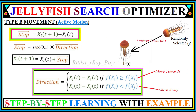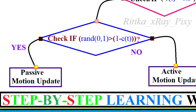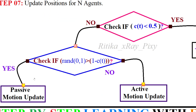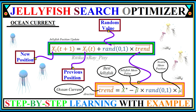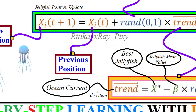These two motions — passive and active — are switched using the time control mechanism. First we calculate the time control value; if the condition is true, jellyfish follow the ocean current and we update the jellyfish position according to the ocean current. If the condition is not true, we use active or passive motion inside the swarm. The ocean current calculation is done using a dedicated equation to first calculate the ocean current direction.